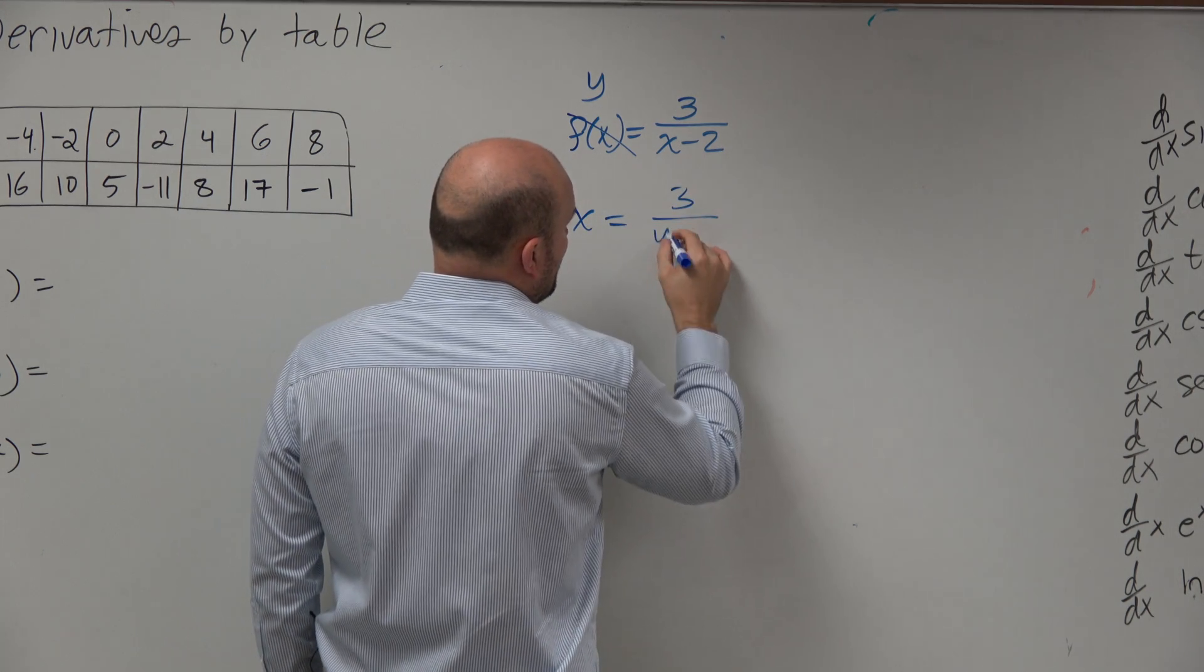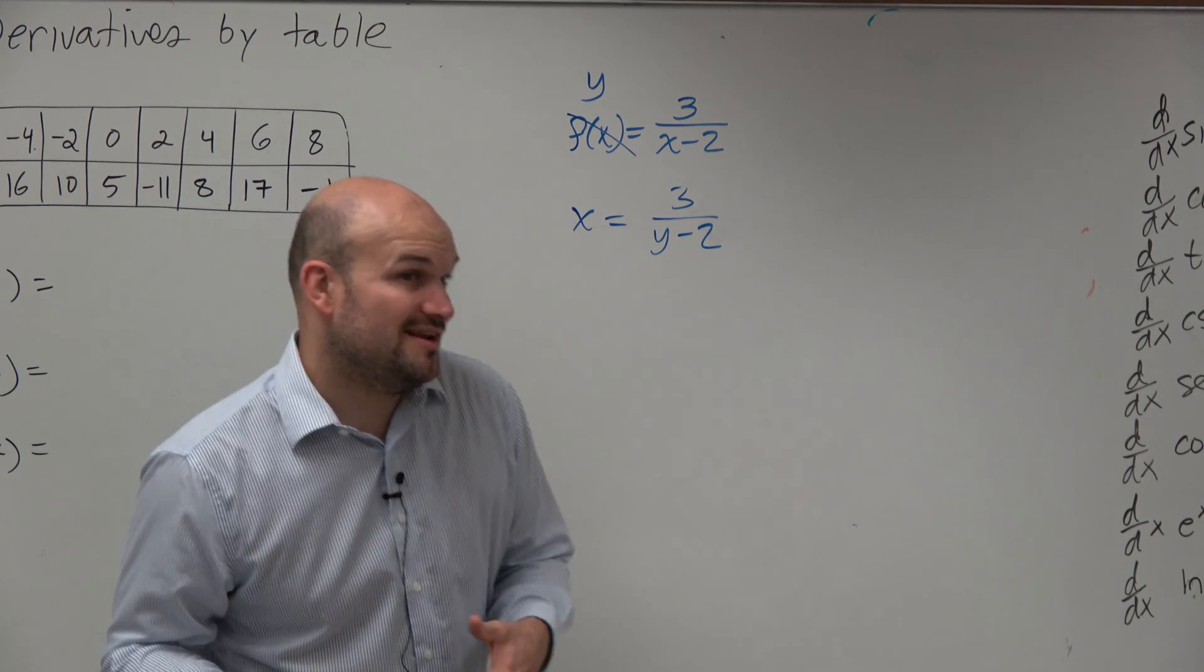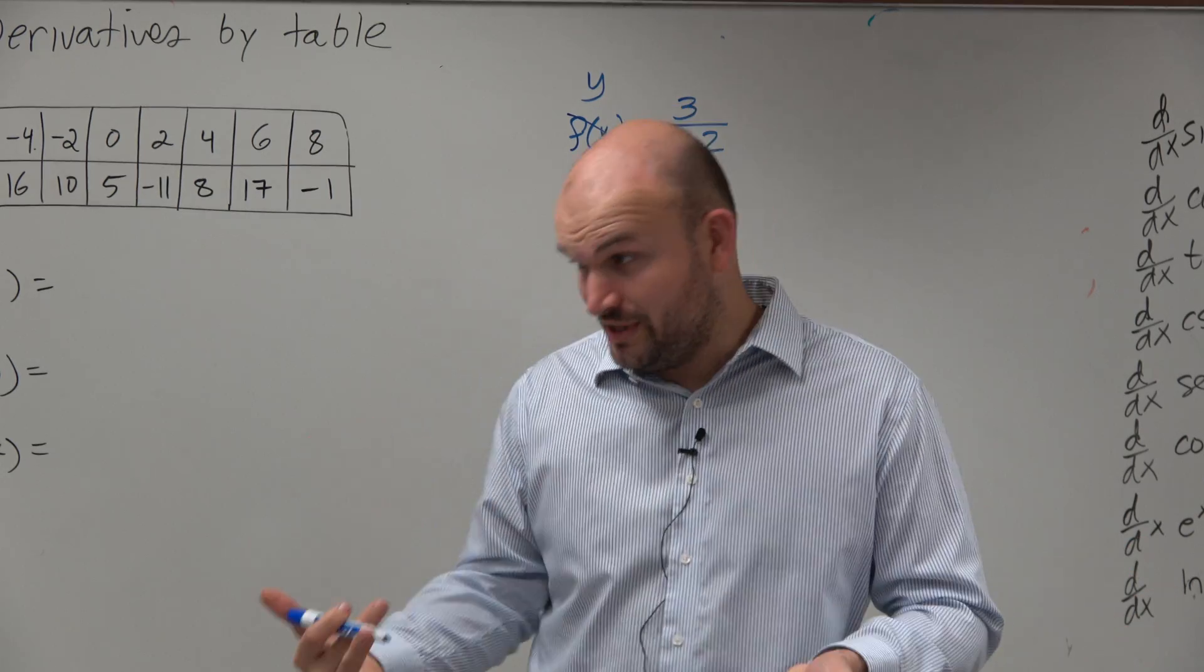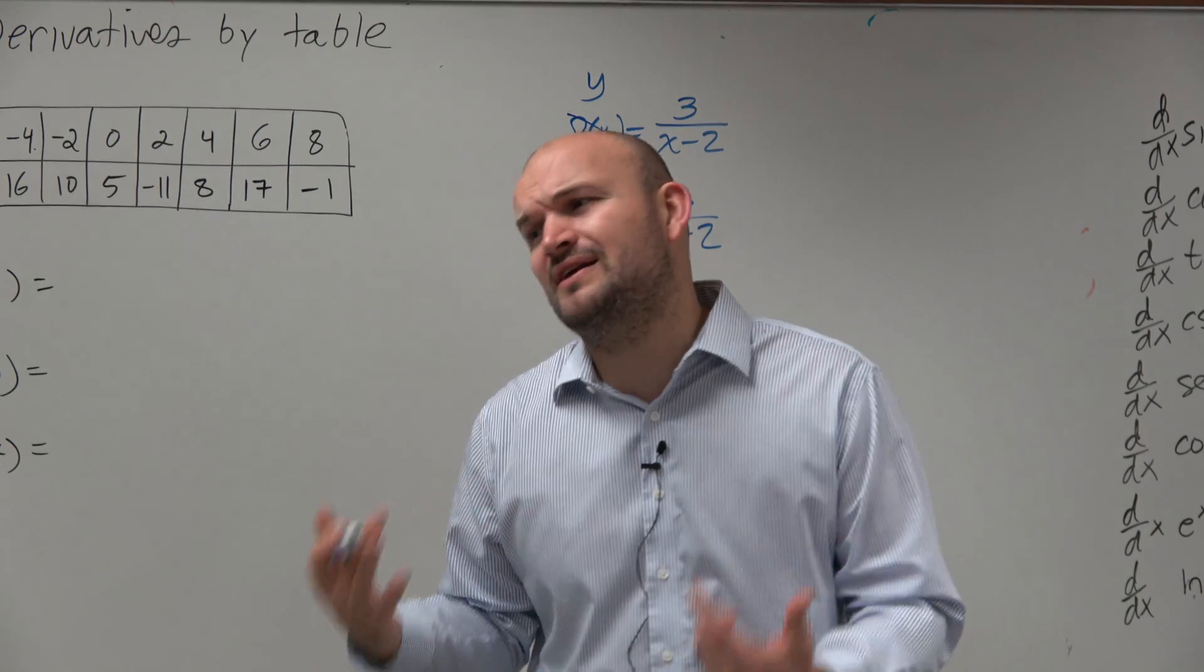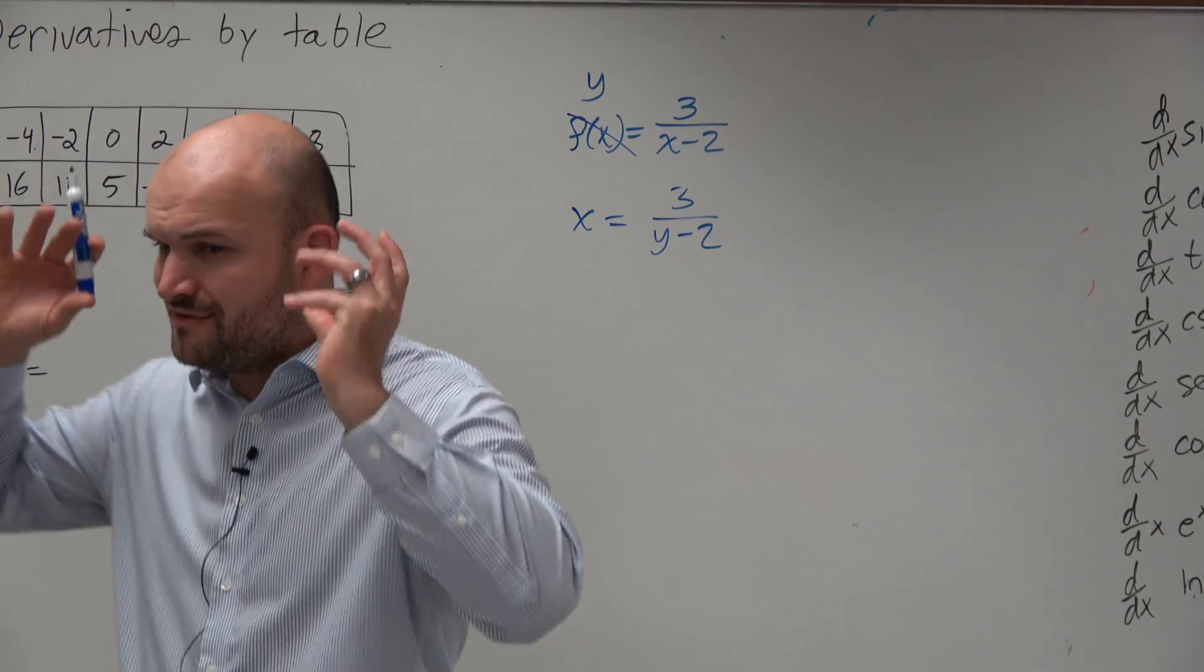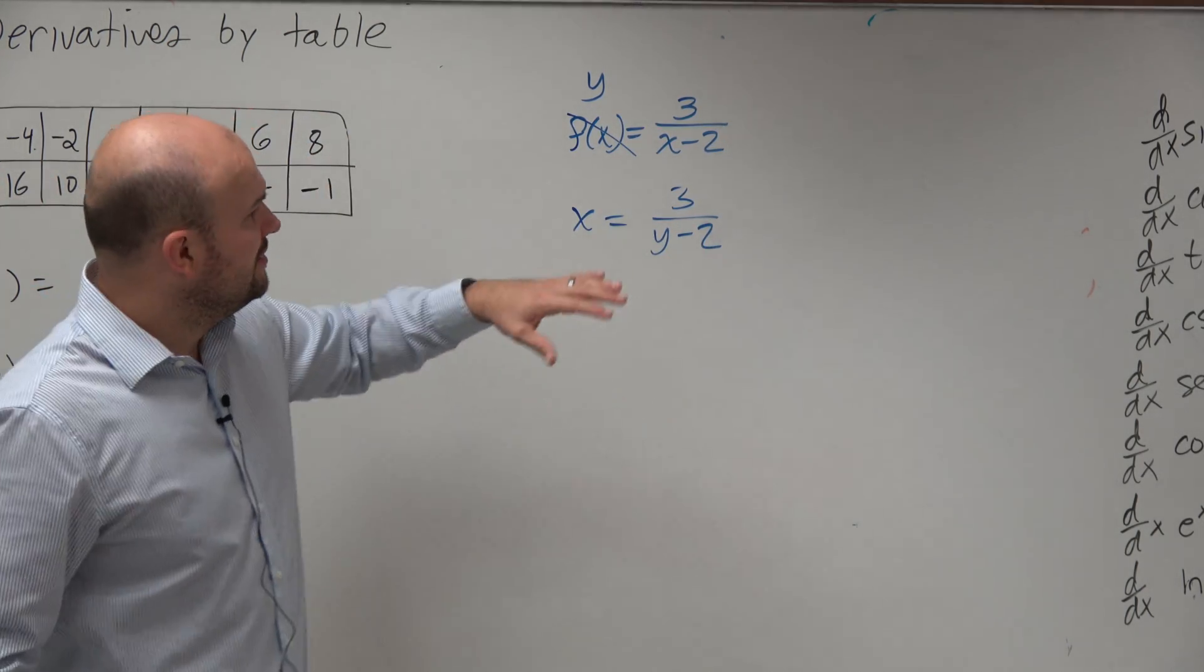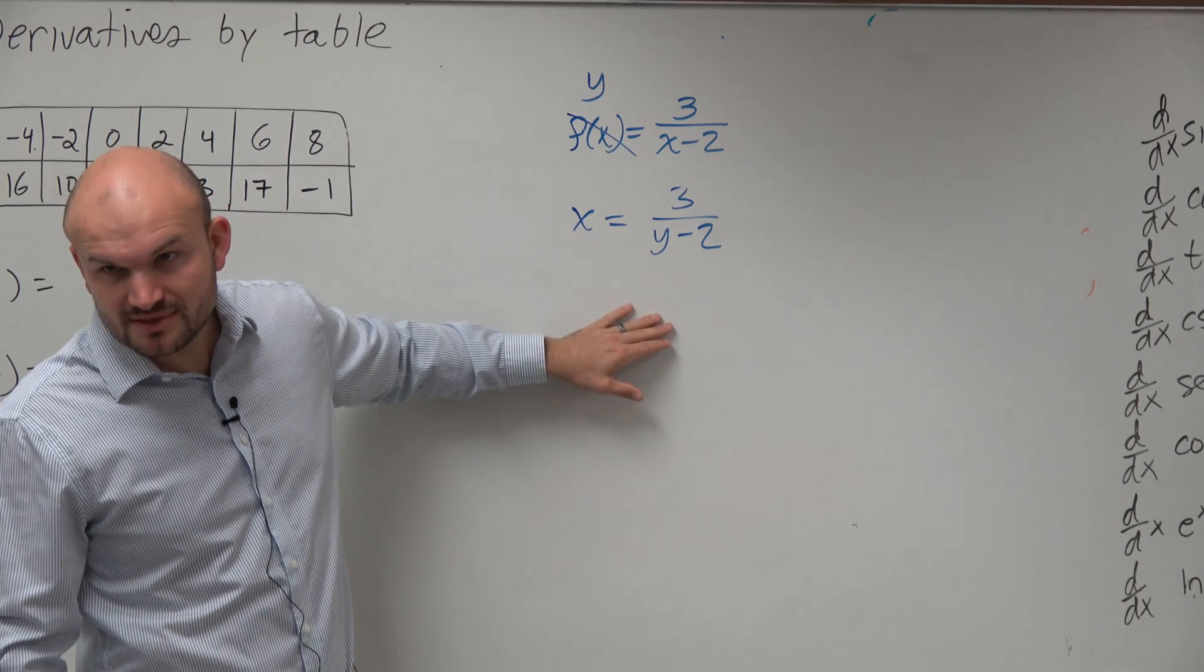x equals 3 over y minus 2. You guys get the benefit, because the other kids already took the quiz, and this was one step that a lot of kids just missed and they had to get marked down. So please, if anything, even if you're struggling with this or you have one of those mental blocks, please at least swap the variables, OK?